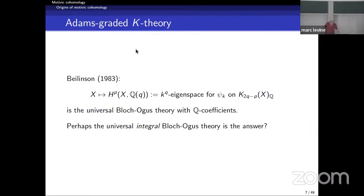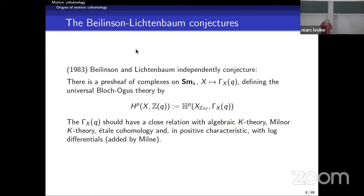Beilinson gave an idea of what this Bloch-Ogus theory should be. He noticed that if you take rational K-theory, you can break it up with respect to eigenvalues for the Adams operations, and that gives you a second Tate grading or Tate twist, forming the universal Bloch-Ogus theory with Q-coefficients. This suggests that perhaps the universal integral Bloch-Ogus theory is the theory we're looking for. Based on this and many other things, Beilinson and Lichtenbaum conjectured that this universal Bloch-Ogus theory should be represented by some presheaf of complexes on smooth varieties over the given base field, as the hypercohomology of these complexes.